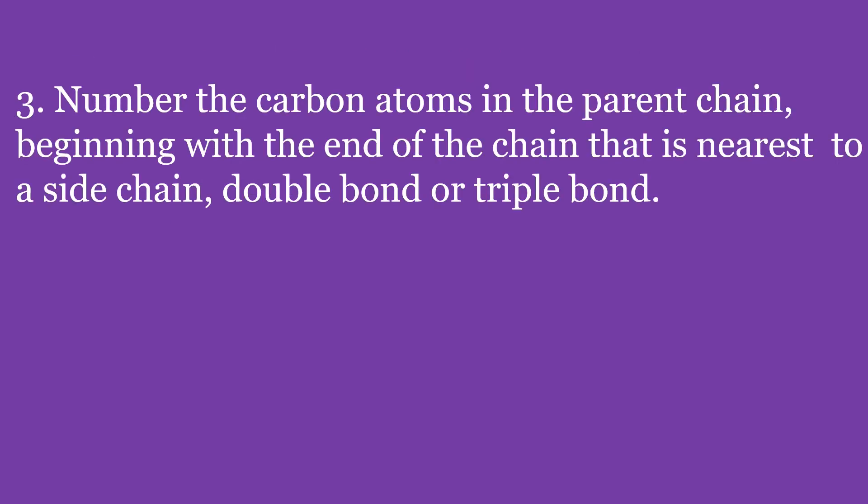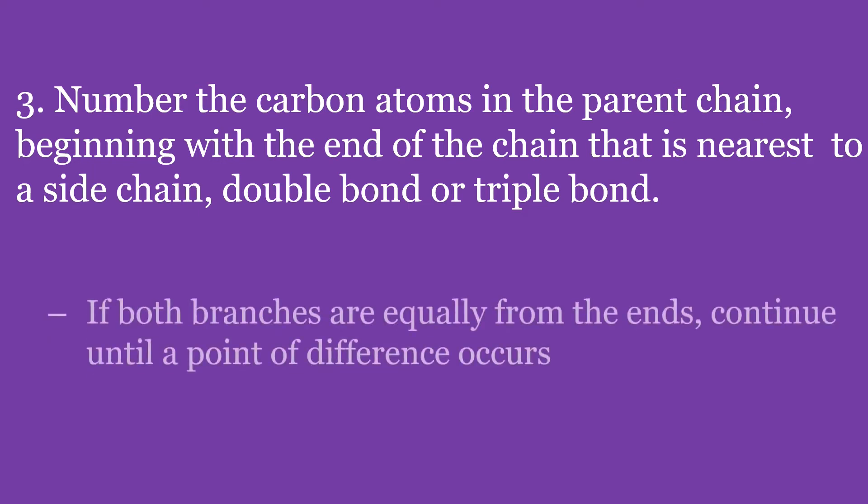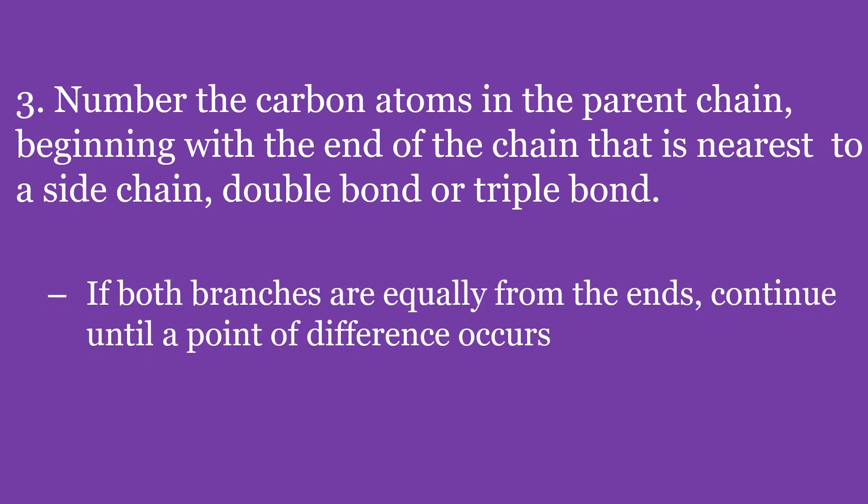Rule 3: Number the carbon atoms in the parent chain beginning with the end of the chain nearest to a side chain, double bond, or triple bond. If both branches are equally distant from the ends, continue numbering until a point of difference occurs.